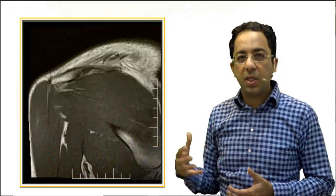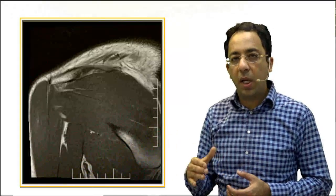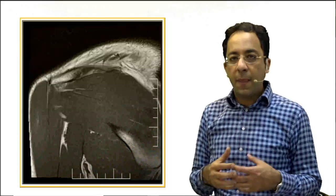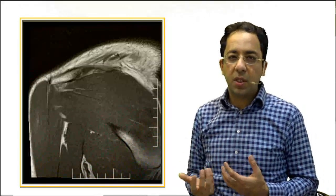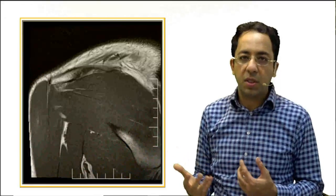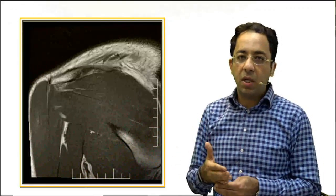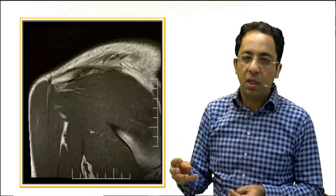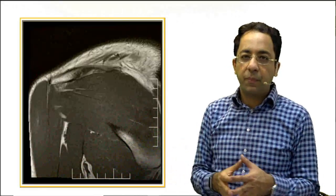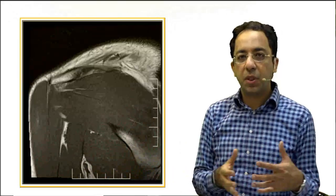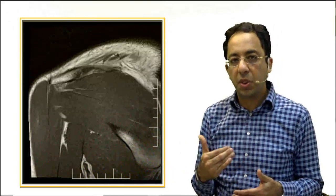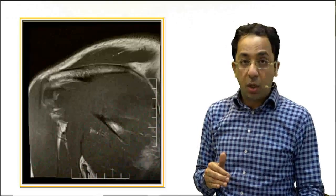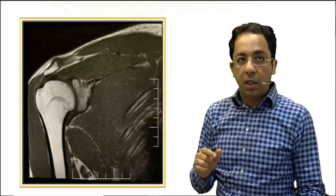Remember that muscles give an intermediate signal on MRI, while tendons and ligaments appear dark on both T1 and T2 weighted images. A T2 weighted image is a fluid-sensitive image. If there is a tear in the tendon, that area will appear bright because of the presence of fluid. Therefore on a T2 weighted image or a fat-suppressed fluid-sensitive image, we can identify tendinous tears as bright areas.